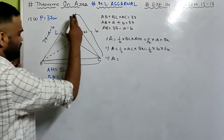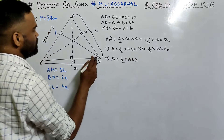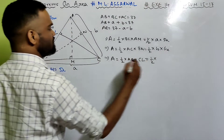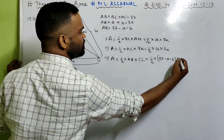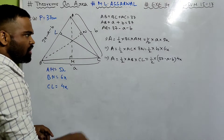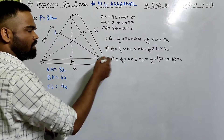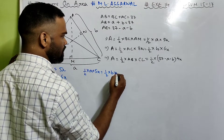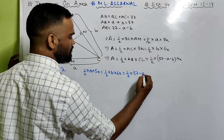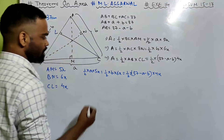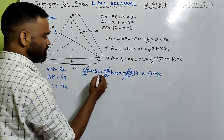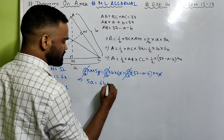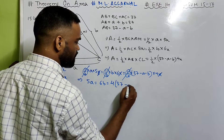Now we can equate these three expressions because they are areas of the same triangle. So: half times a times 5X equals half times b times 6X equals half times (37 minus a minus b) times 4X. The halves cancel out and the X's also cancel out. What remains is: 5a equals 6b equals 4 times (37 minus a minus b).